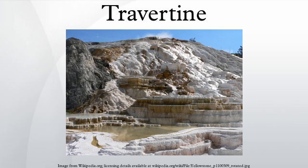Travertine may precipitate out directly onto rock and other inert materials, as in Pamukkale or Yellowstone. In Italy, well-known travertine quarries exist in Tivoli and Guidonia Montecelio, where we can find the most important quarries since ancient Roman times, like the old quarry of Bernini in Guidonia.